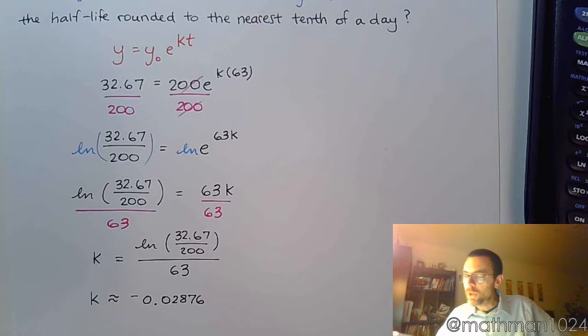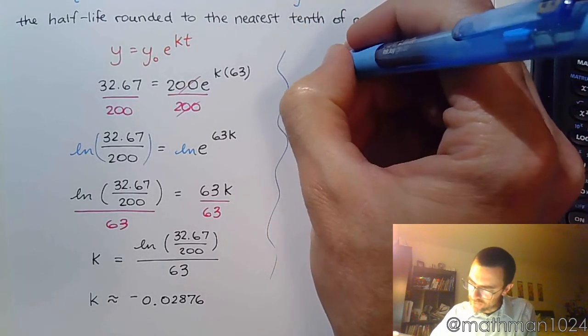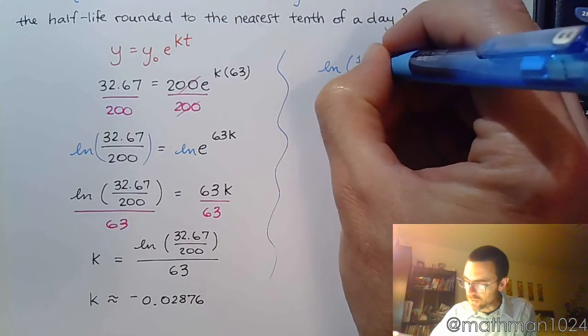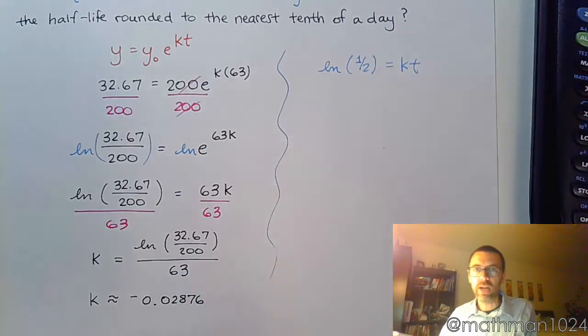So that's my K. But the question here is, what is the half-life? Well, it goes back to what we were talking about in the last video, right? Your half-life is going to be based off of this formula. The natural log of 1/2 is equal to K times T.